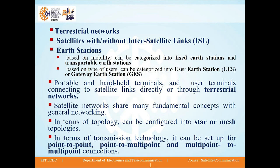From the previous slide, we know there are terrestrial networks, satellite networks with or without inter-satellite links, and earth stations. Based on mobility, they can be categorized into fixed earth and transportable earth stations. Based on type of users, they can be categorized into user earth station (UES) or gateway earth station (GES), along with portable and handheld terminals and user terminals connecting to satellite links directly or through terrestrial networks.